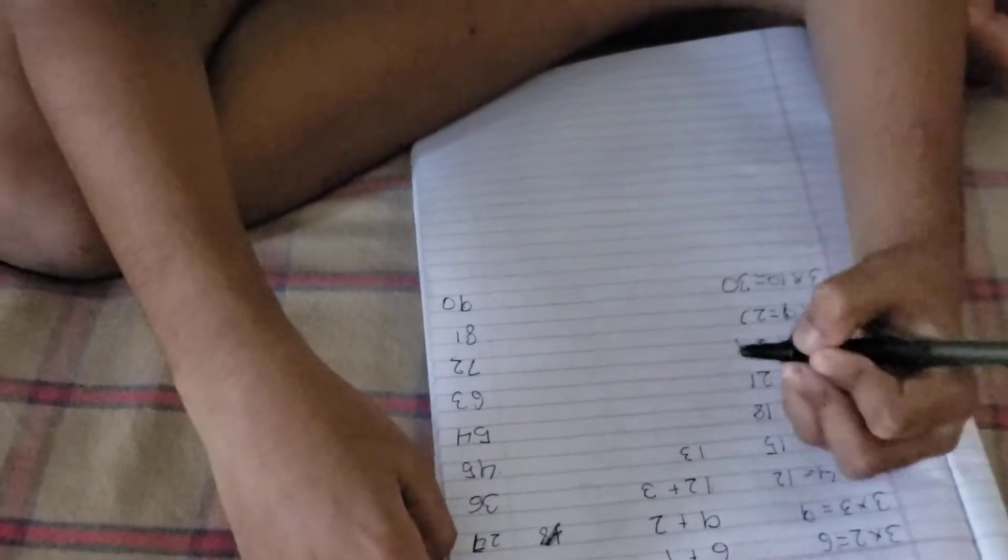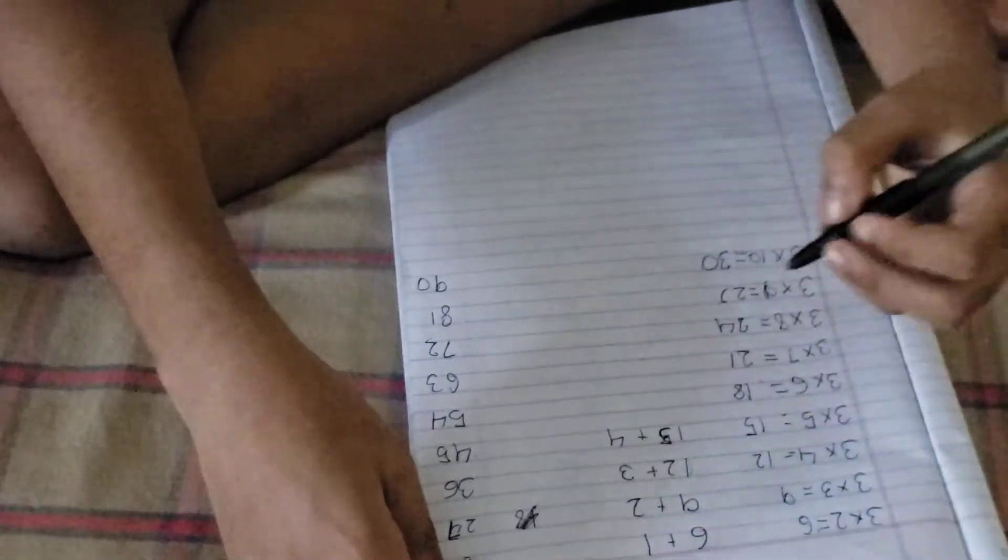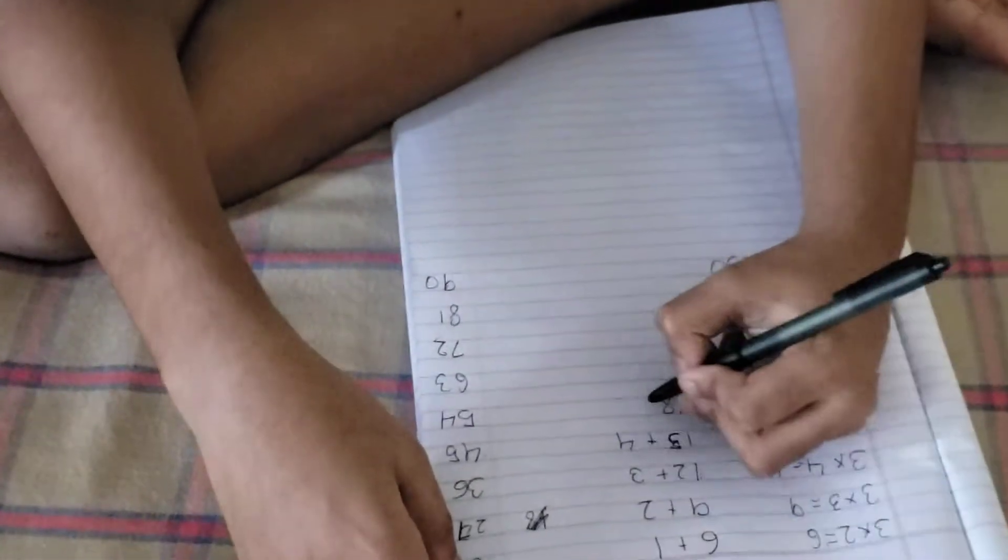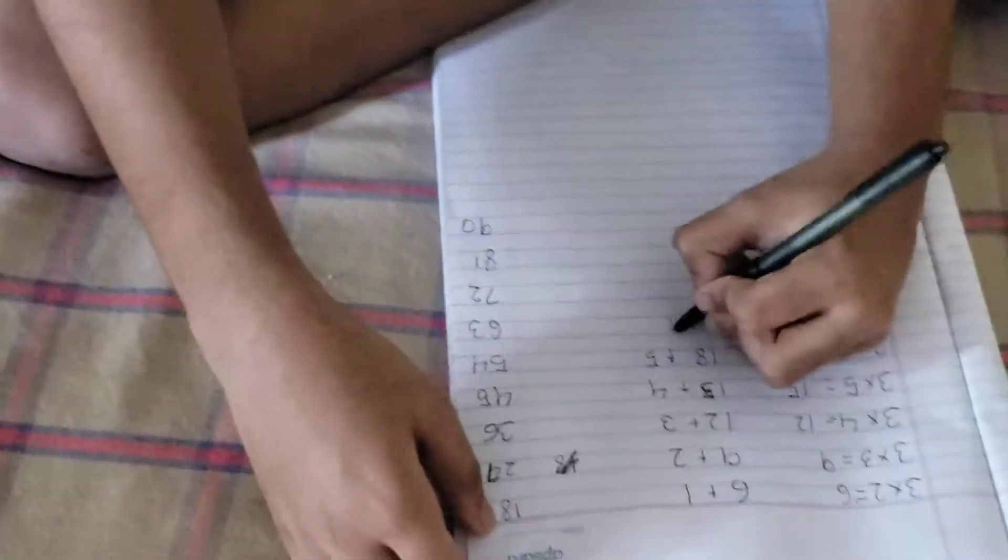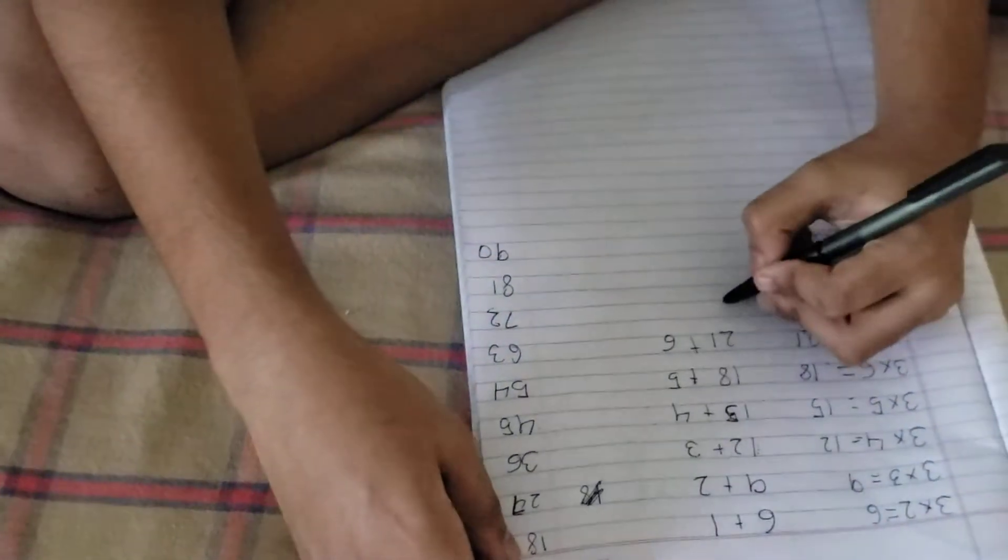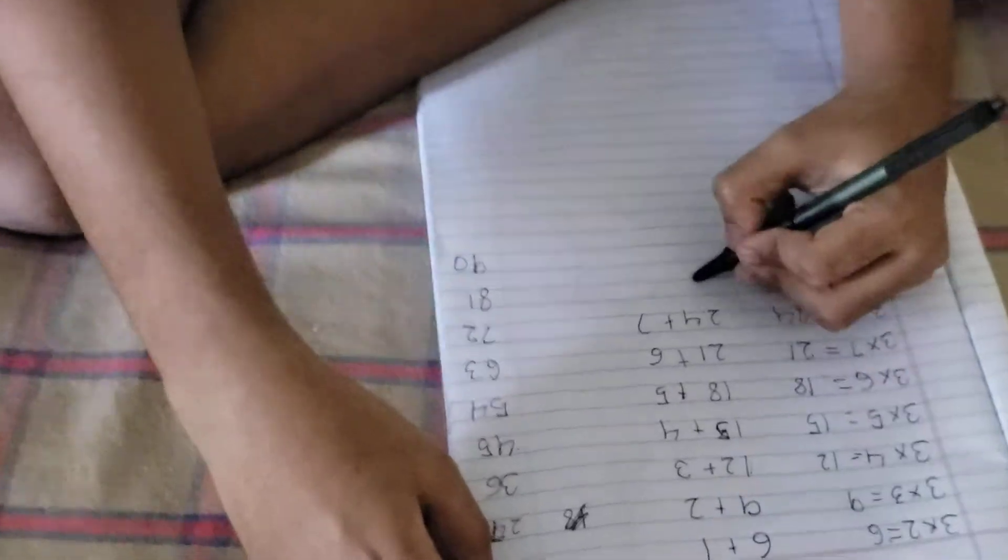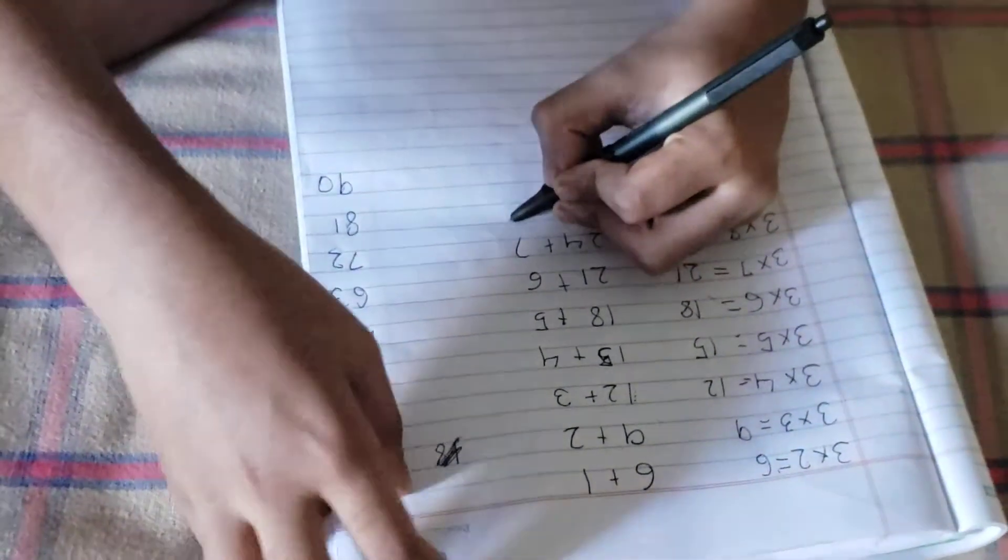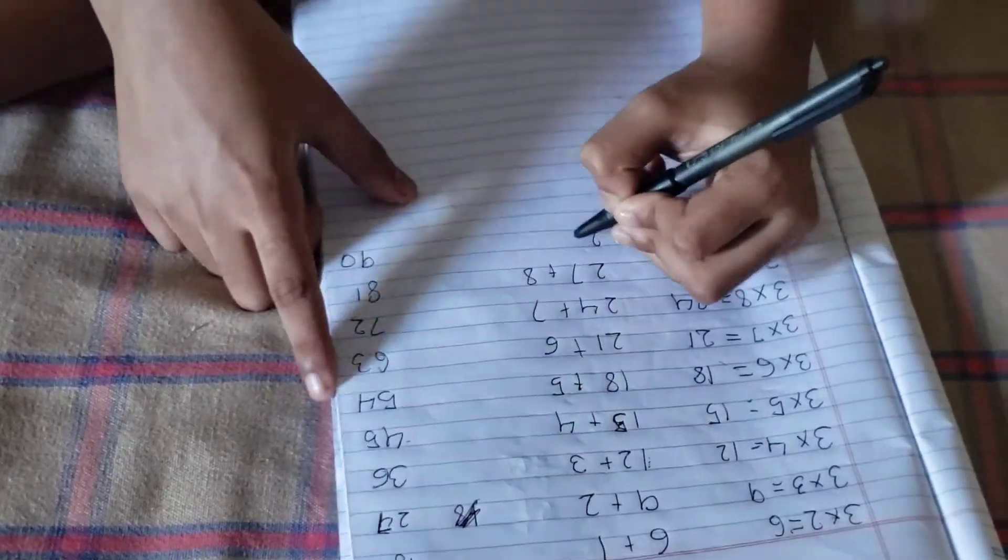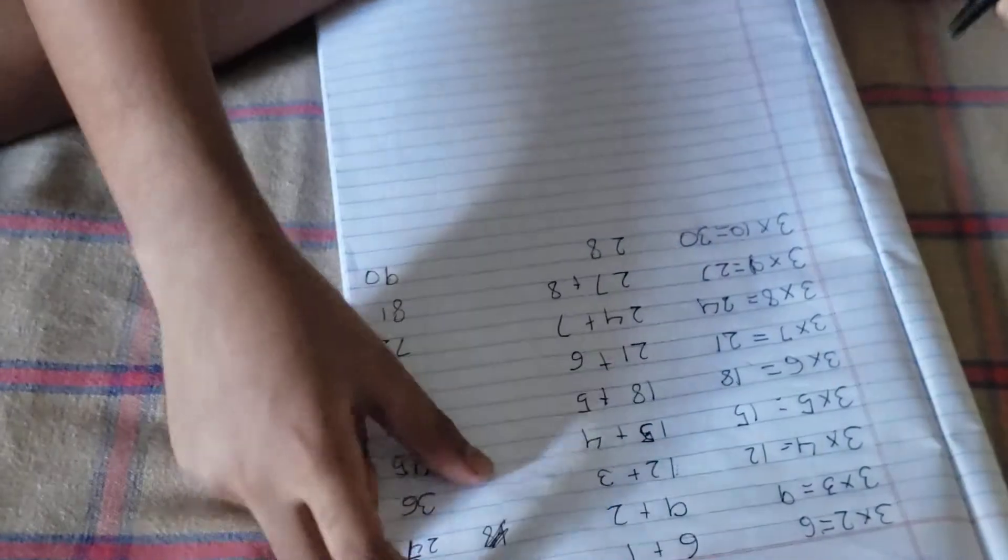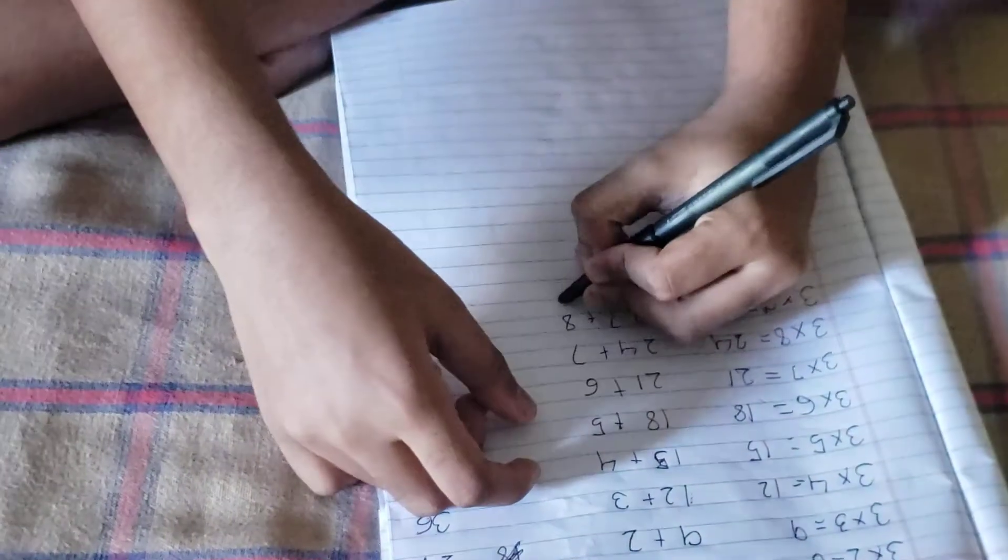12 plus 3. 15 plus 4. 18 plus 5. 21 plus 6. 24 plus 7. 27 plus 8. 30 plus 9.